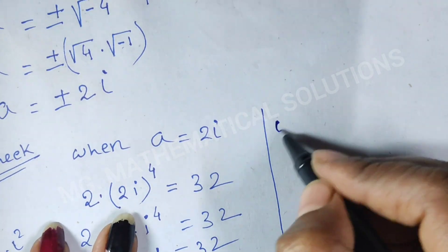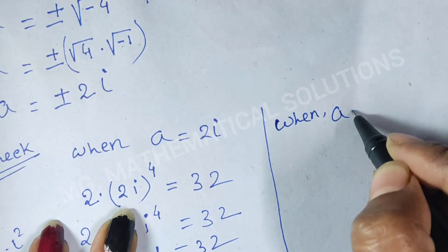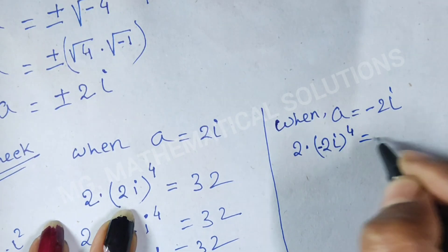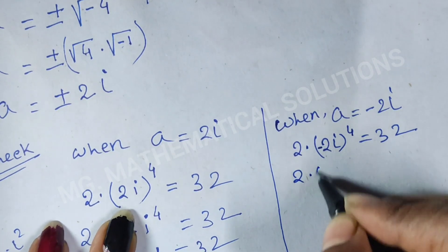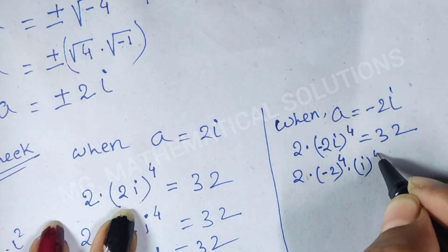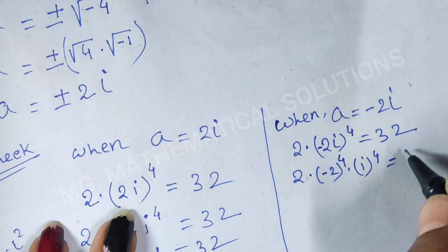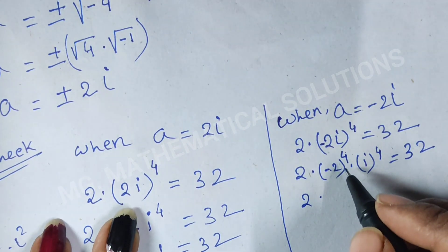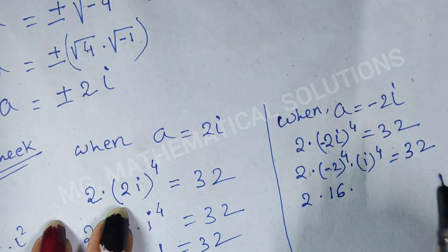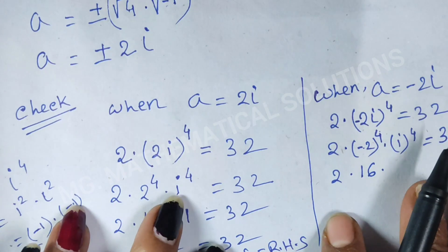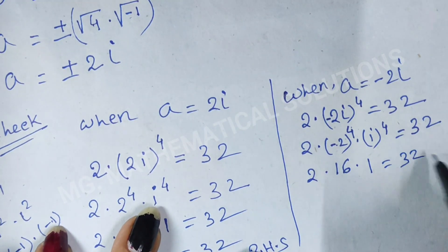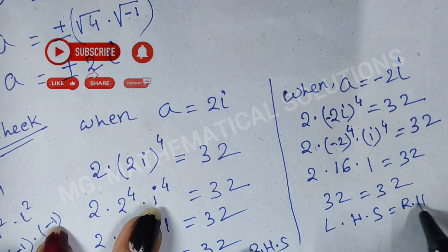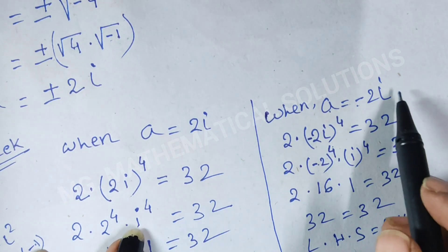When a equals minus 2 iota, the equation becomes 2 times (minus 2 iota) to the power 4 equals 32. That gives 2 times (minus 2) to the power 4 times iota to the power 4. Since (minus 2) to the power 4 is 16 and iota to the power 4 is 1, we get 2 times 16 equals 32, so 32 equals 32. Left hand side equals right hand side, hence a equals minus 2i satisfies the given equation.